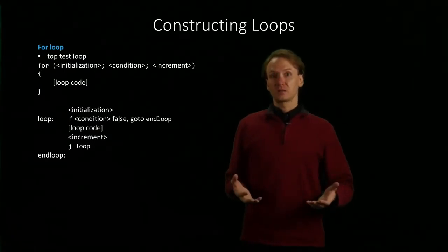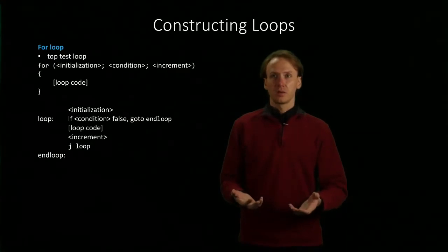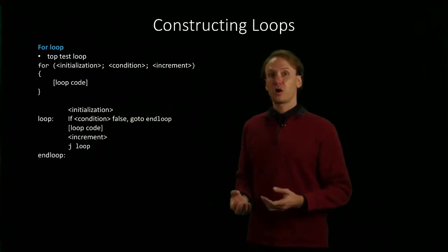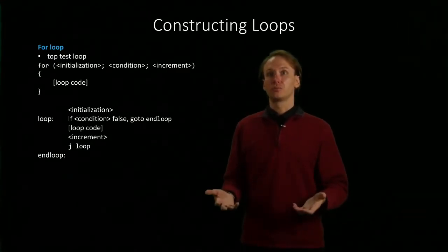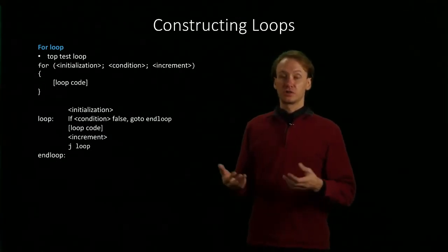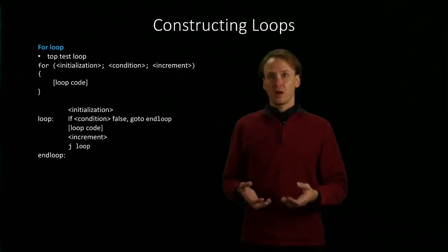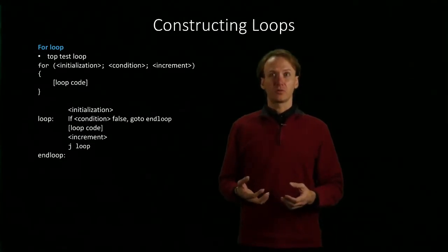So our for loop has more pieces to it, rather like the for loop does, but it's not too much more complex than our while loop. We've still just got a loop label, a jump loop instruction, and an end loop label. Everything else in there is really about the loop itself.